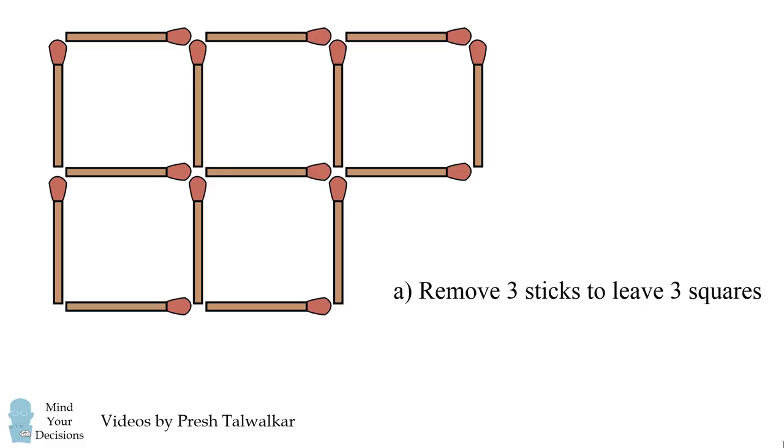Let's solve each puzzle in turn. First, let's remove three sticks to leave three squares. We'll remove one, two, and three. This leaves exactly one, two, three squares.